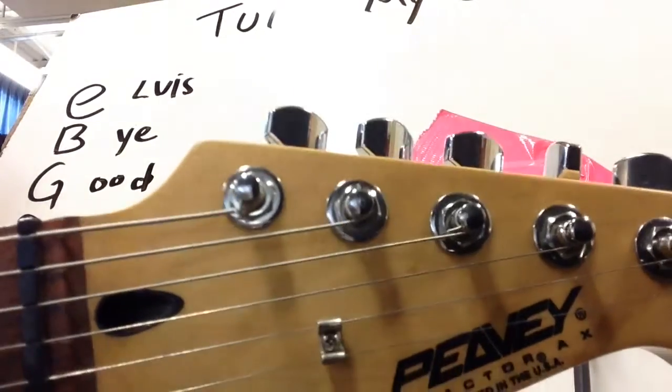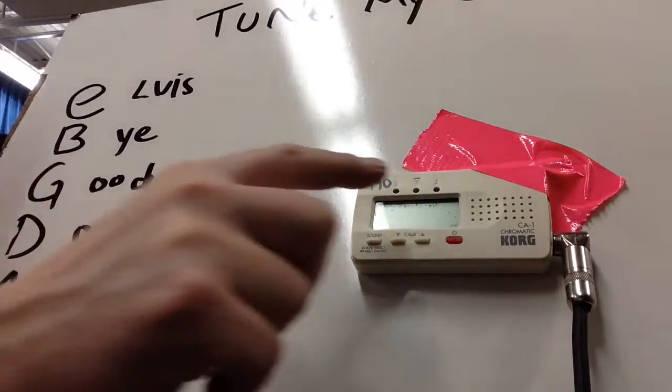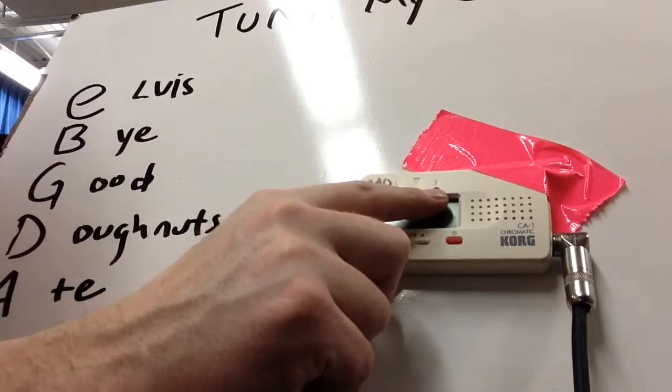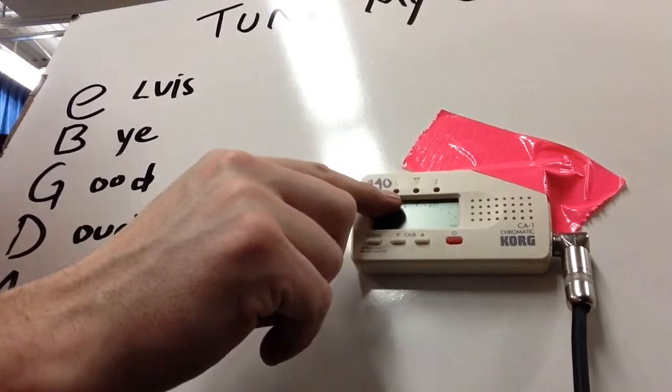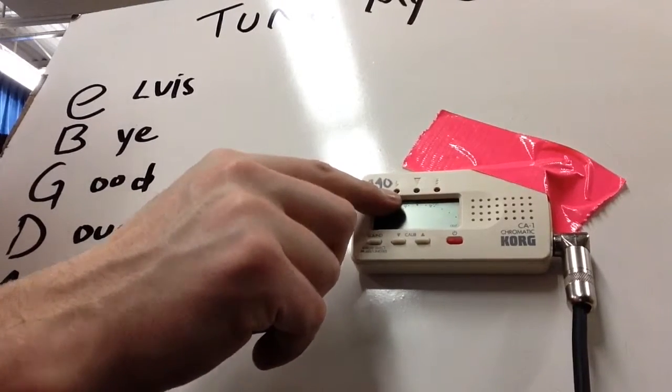Now, if your note is too sharp on one side, that means your string is too tight. You've got to loosen your string. If your string is too flat, that means your string is too loose. You've got to tighten your string.